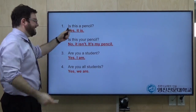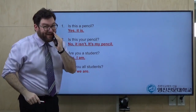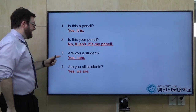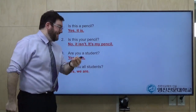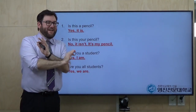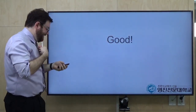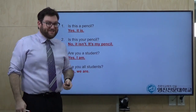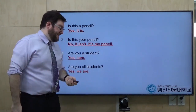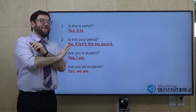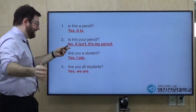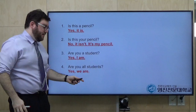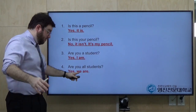Okay, here are the answers. Number one: is this a pencil? Yes, it is — you can say 'yes, it is.' Number two: is this your pencil? No, it isn't — it's my pencil. Number three: are you a student? Yes, I am — or no, I'm not. Number four: are you all students? Yes, we are — 'we' is the pronoun and 'are' is the B-동사.